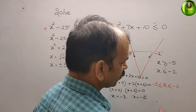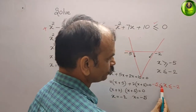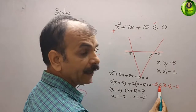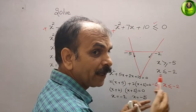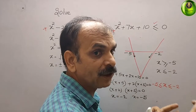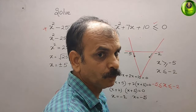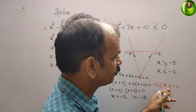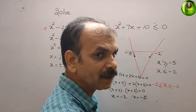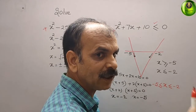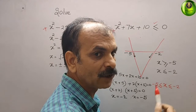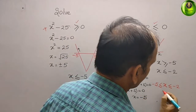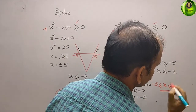Now check: x should be greater than minus 5, that means minus 4, minus 3, minus 2; and x is less than minus 2, that means minus 3, minus 4, minus 5 — they are correlating. Therefore the answer is minus 5 less than or equal to x less than or equal to minus 2.